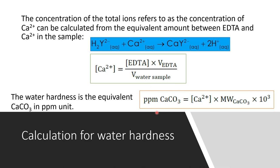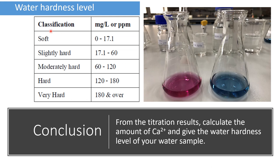In your report, report the level of water hardness using the classification table. Soft water has an equivalent CaCO₃ concentration of 0–17.1 ppm, while very hard water is 180 ppm or above. From your titration results, calculate the amount of calcium ion, convert to the water hardness level in ppm as CaCO₃, and classify your sample as soft, hard, or very hard water.